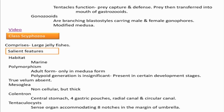Next we move to the class Scyphozoa, where we are learning about jellyfish. Some students may be familiar with these beautiful organisms moving through the sea surface — we can notice them easily from a boat. Jellyfish come under the class Scyphozoa. Regarding habitat, they are marine. Regarding polymorphism, the two forms present are polyp and medusa, and in the case of jellyfish, all adult forms are in the medusoid stage.